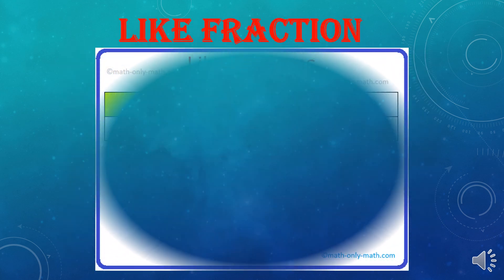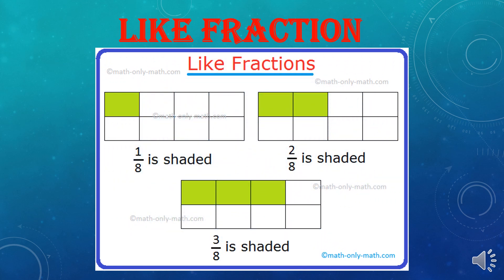Like Fractions are fractions in which the denominator is the same, as shown in the picture. In the first picture, it's 1 by 8 because 1 part out of 8 parts is shaded. In the second picture, 2 parts out of 8 are shaded, and in the third picture, 3 parts out of 8 are shaded. The same thing in all pictures is that the denominator is 8 because the total parts are the same.